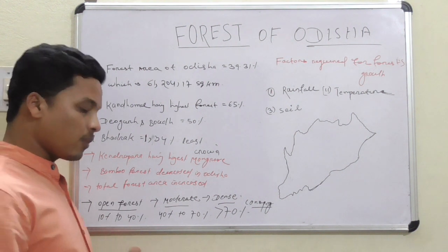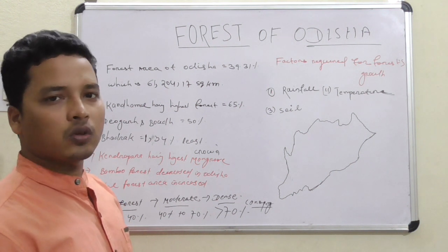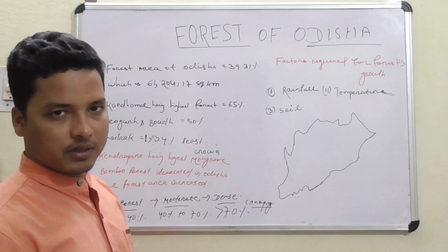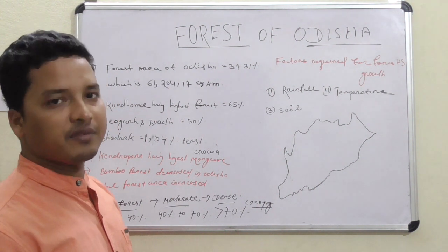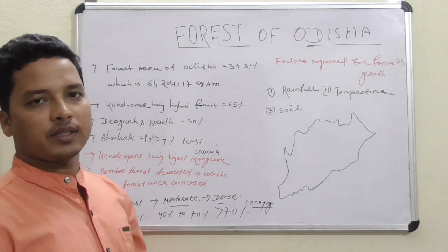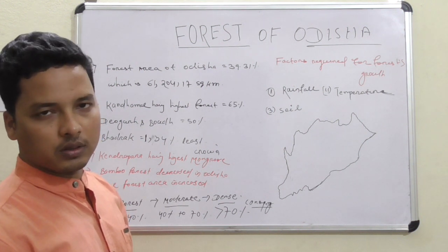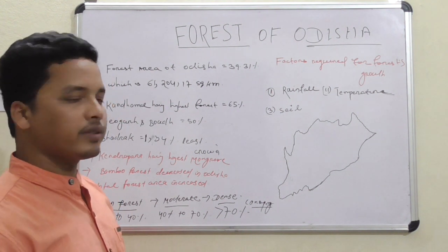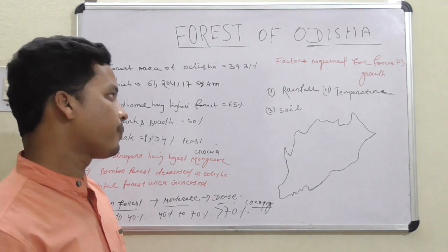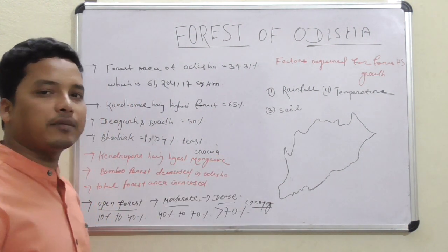If somebody asks what kind of climate Odisha has, the indicator of the climate of any region is its natural vegetation. For example, xerophytic plants like dates or thorny forest indicate a desert climate. Odisha has a tropical climate because tropical vegetation is found here. The factors for forest growth are rainfall, temperature, and soil.